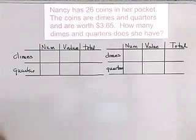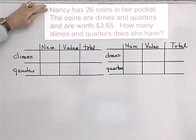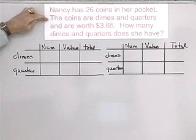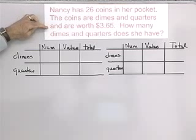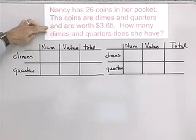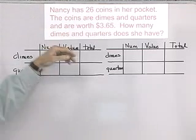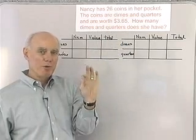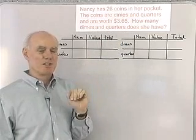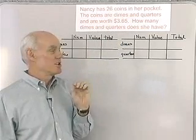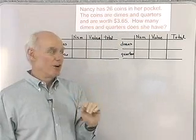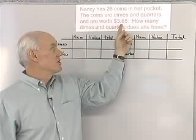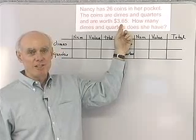Here's our problem. Nancy has 26 coins in her pocket. The coins are either dimes or quarters, and they're worth $3.65. How many dimes and how many quarters does she have? So there are 26 coins total, and the total value of all those coins is $3.65.